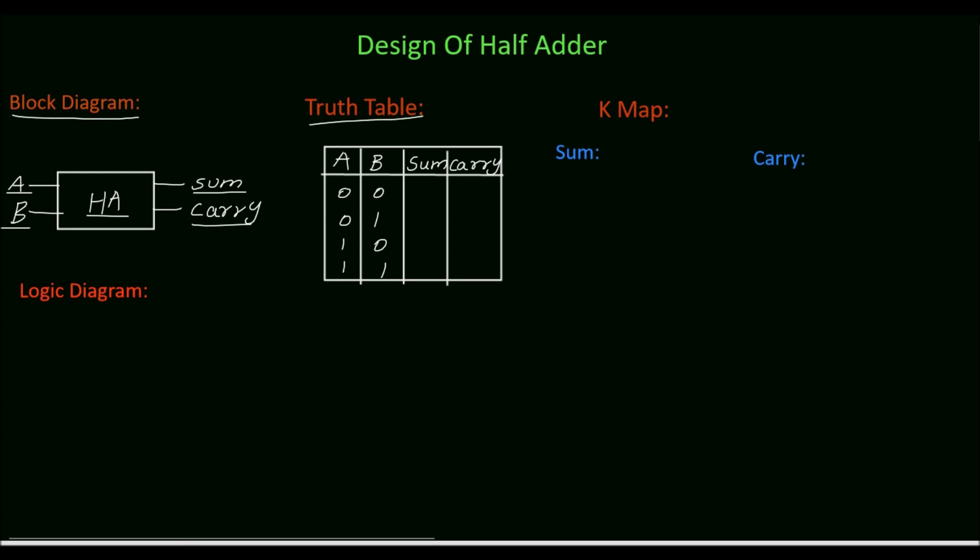Next we will draw the truth table. For 2 inputs we will have 4 different input combinations: 00, 01,